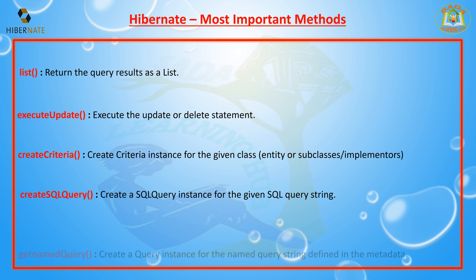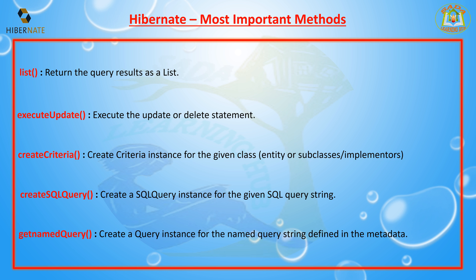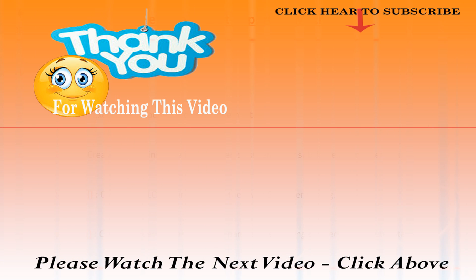The next method is getNamedQuery. If you are using HQL or native SQL queries in multiple places, you can define those queries globally and give them a name. When you want to retrieve them, call getNamedQuery with the name and it returns the query object — creating a query instance for a named query string defined in the metadata.